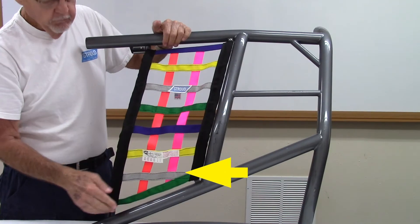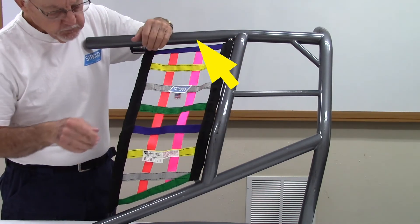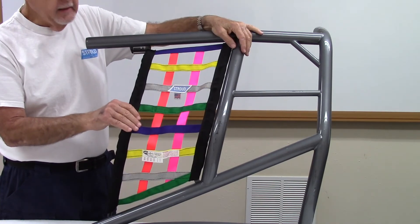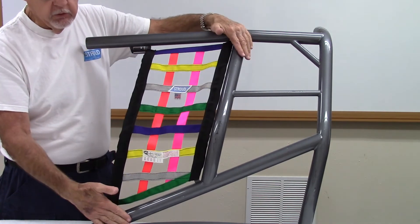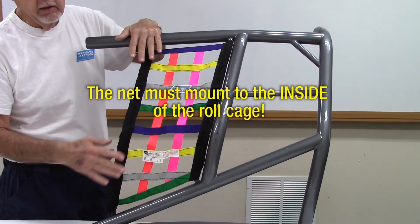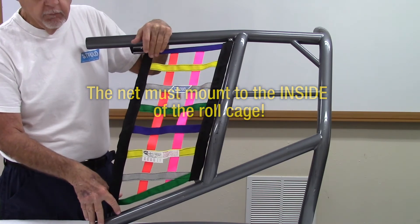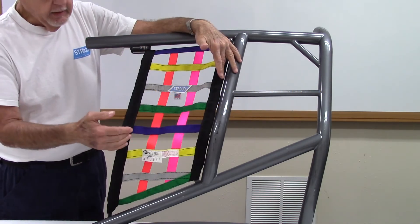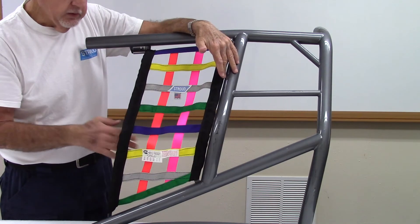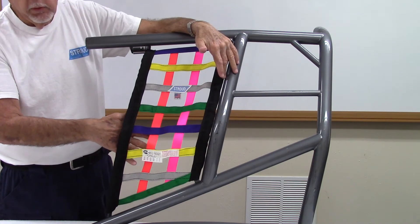The fixed mounting of the net must be at the bottom or back of the opening. Release points must be at the top or front of the opening. Also, the net is required to be mounted on the inside of the roll cage. If mounted to the outside of the cage, the net could be scrubbed off if the vehicle was sliding on its side in a crash. Please keep in mind that even though vertical rods are legal and will prevent the net from sagging into the vehicle, you do run the risk of contact with them in the event of an accident.